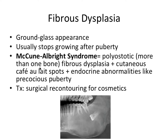There's also a syndrome associated with fibrous dysplasia: McCune-Albright syndrome. It features polyostotic fibrous dysplasia — meaning it affects more than one bone — plus cutaneous cafe au lait spots, which are basically a certain type of freckle, plus endocrine abnormalities like precocious puberty occurring a little earlier. That's a syndrome I would know for the exam.